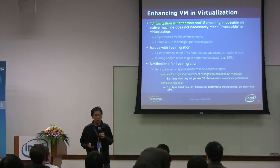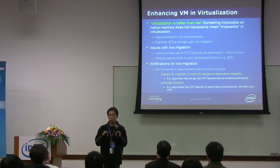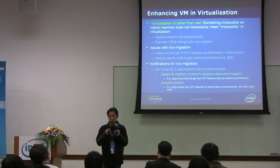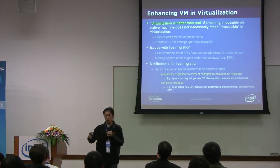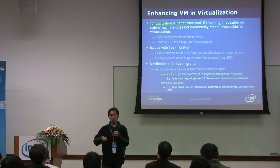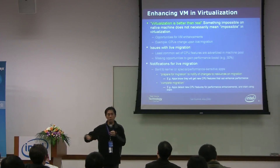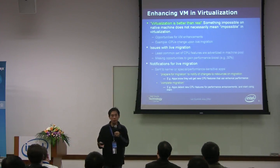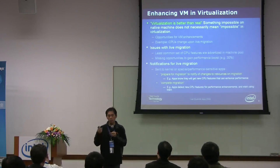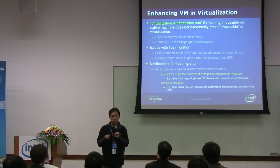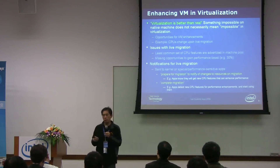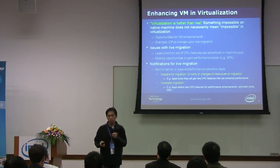The issue with live migration is you have to define your CPU pool with common features. So if you live migrate to new hardware and the new hardware has more performance features — for example, encryption or something like that — you cannot use that. We specifically observed cases where there's a 30% difference if we use advanced instructions, for example. But if we don't do that, we're basically missing that performance optimization.